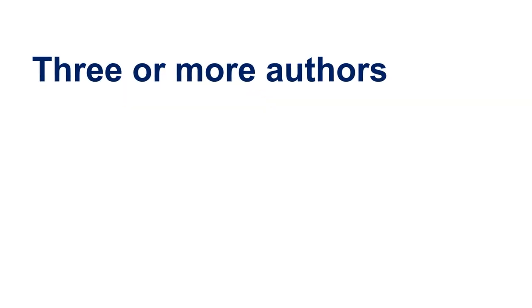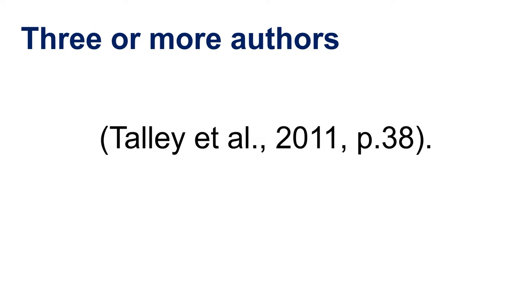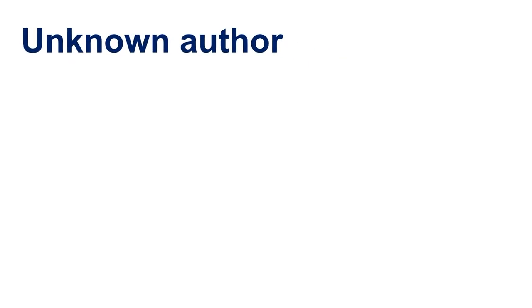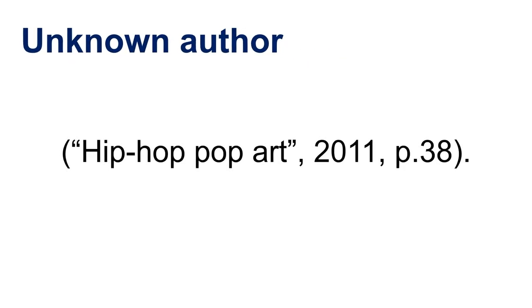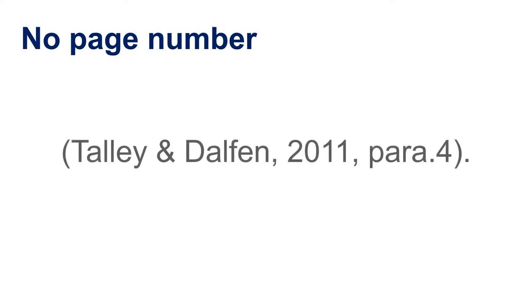For three or more authors, follow the first author's name with the words et al. followed by a period, meaning "and others." If there is no known author, include a shortened title in place of the author's name. If your source does not include page numbers, indicate the paragraph where you found the information by using the abbreviation PARA followed by a period.